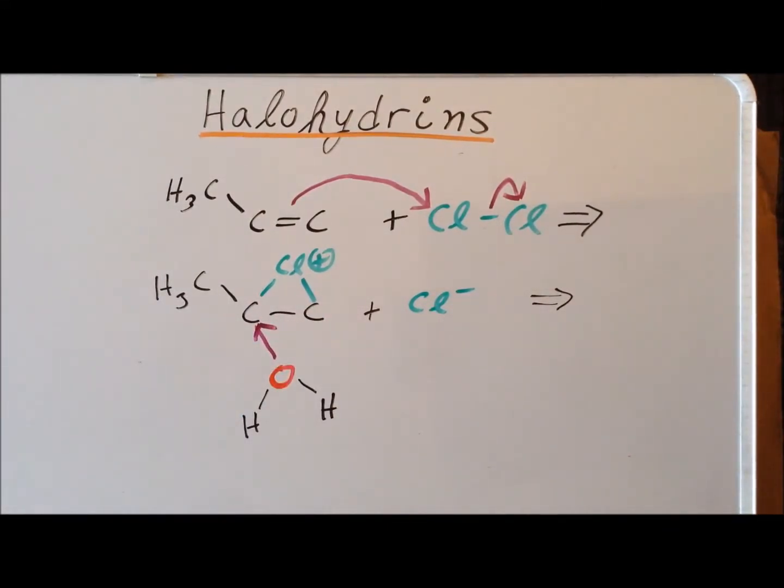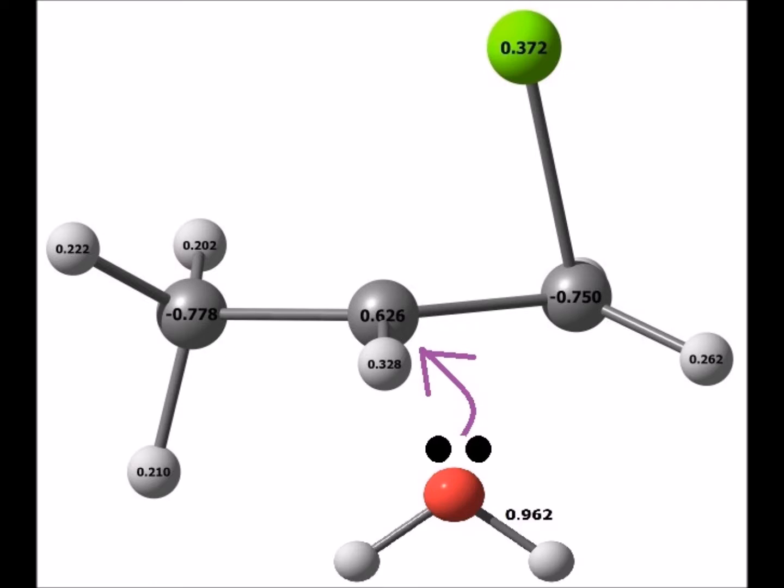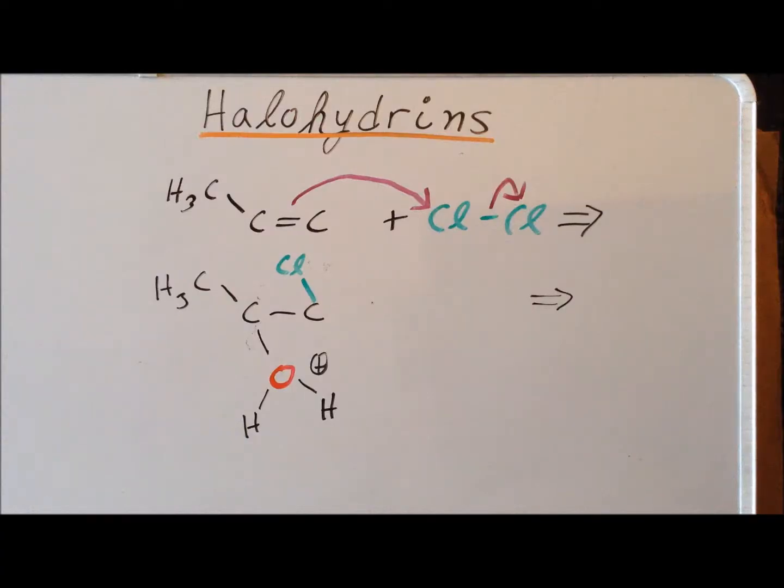So you will have attachment of the protonated alcohol group, water, to this particular carbon atom. As we expect from Markovnikov's rule, chlorine is attached to the first carbon. The protonated alcohol functionality is attached to the second carbon. And then the final step is reaction with a base, which can be as weak a base as the solvent water molecules. The base abstracts a proton. And we are left with just an ordinary alcohol and the halohydrin.